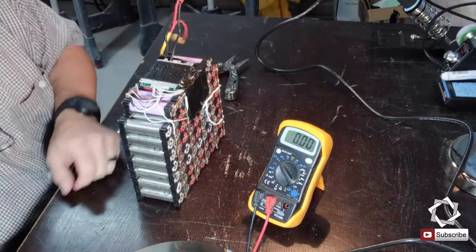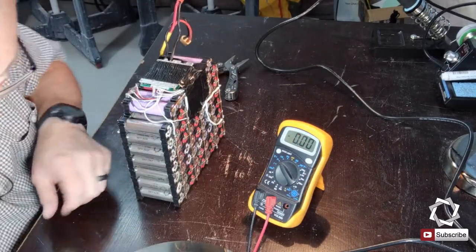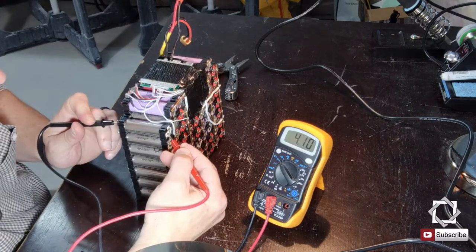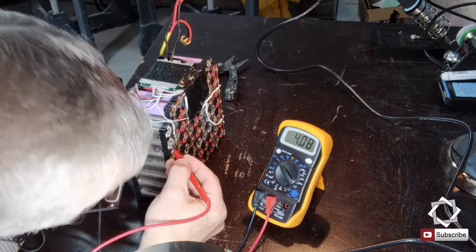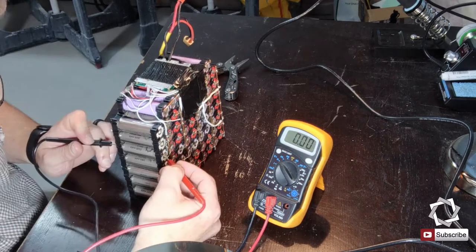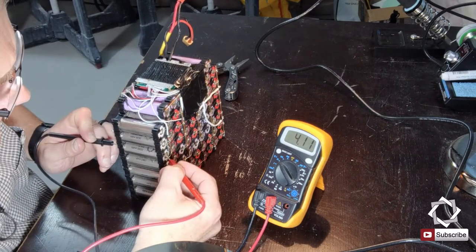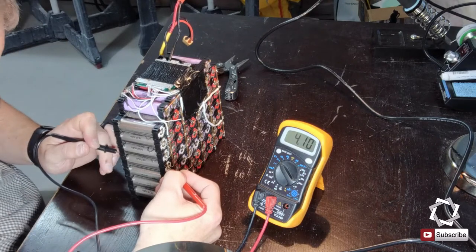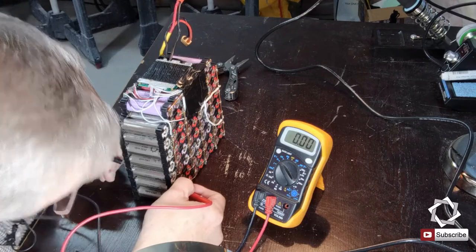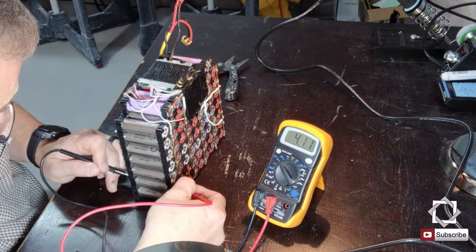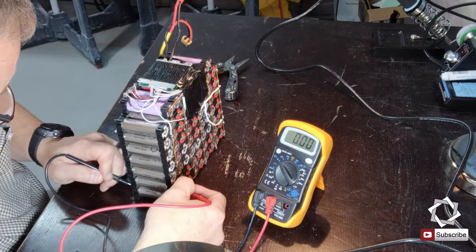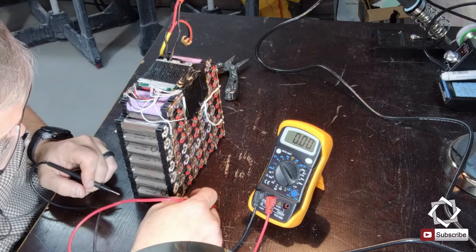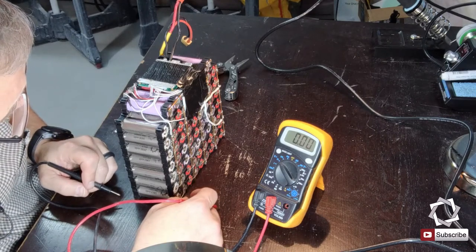So now let's go through and run a test on each cell and see where each cell is at. This and this - that one's 4.1. 4.11, 4.11, 4.10. Nothing yet, this is kind of not really clear what the issue is here. Okay, so they're all balanced at the same but they're a lower voltage.